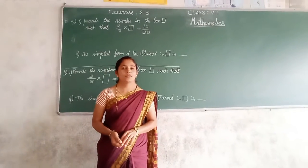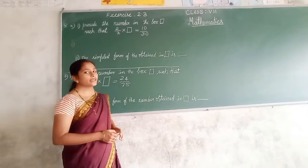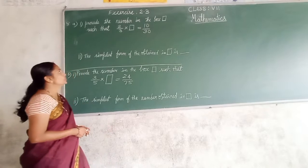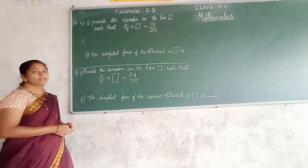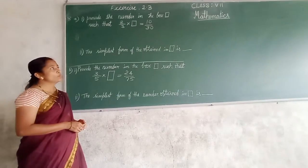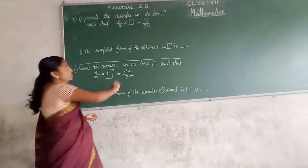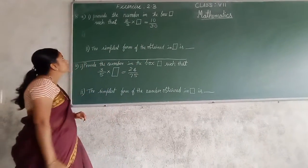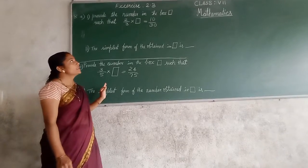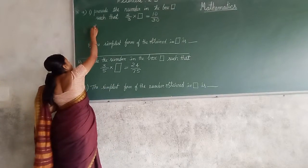Hi my dear students, let us begin mathematics class 7 fractions and decimals lesson exercise 2.3, the last question. Read the question: provide the number in the box. You have to provide the number in the box. The box is given here — 2 upon 3 — such that 2 upon 3 multiplied by what is equal to 10 upon 30.